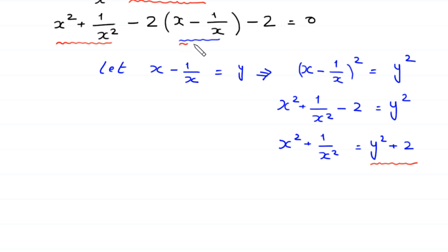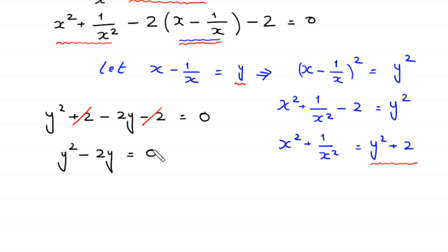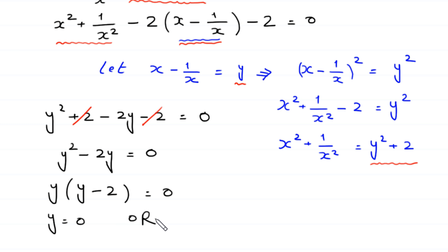Now in this equation, in place of x squared plus 1 over x squared we substitute y squared plus 2, and in place of the factored term we substitute negative 2y. So the equation becomes: y squared plus 2 minus 2y minus 2 equals 0. The positive 2 and negative 2 cancel, leaving y squared minus 2y equals 0.